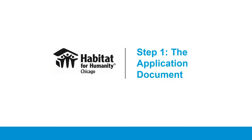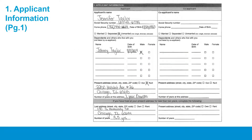Now we will go through the application document starting with page 1. For Section 1, Application Information, please fill out all sections and all lines of this page carefully. Dependents are the people who will be living with you in your new home, that you claim on your tax returns, and that you are financially responsible for. You must show at least two years of residential history on this page — include any previous addresses within the past two years, and add an additional page if necessary.